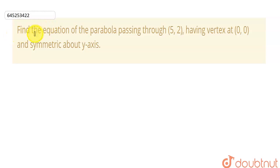So students, in this question we need to find the equation of the parabola which is passing through the point (5,2) and having a vertex at (0,0), and it is given that it is symmetric about y-axis.